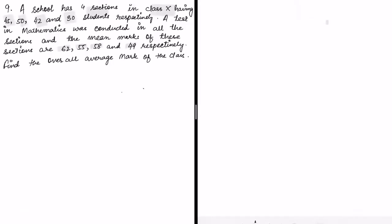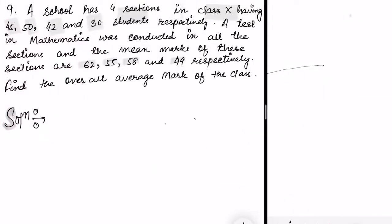Let me do this problem. Solution: A school has four sections in class 10. Let me make a table showing sections and students in each section. This can be written as 45, 50, 42, 30.